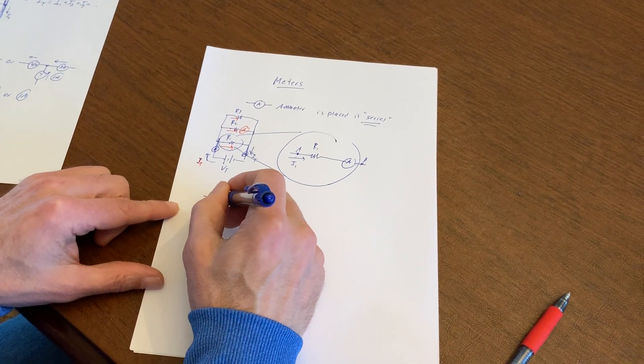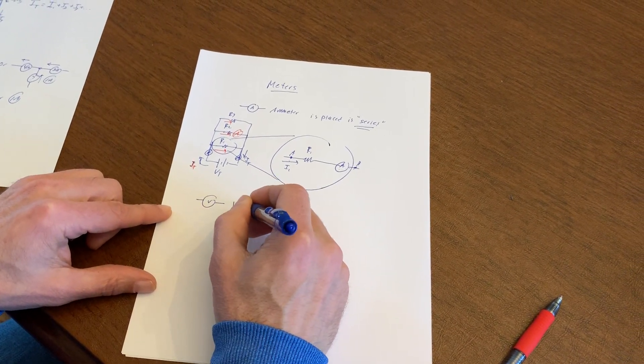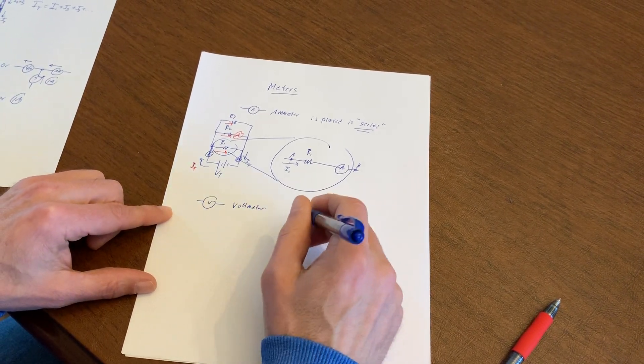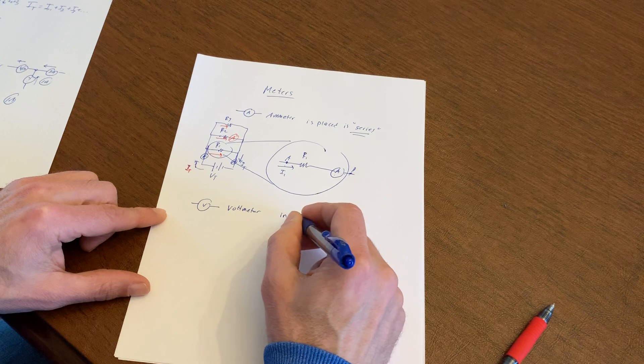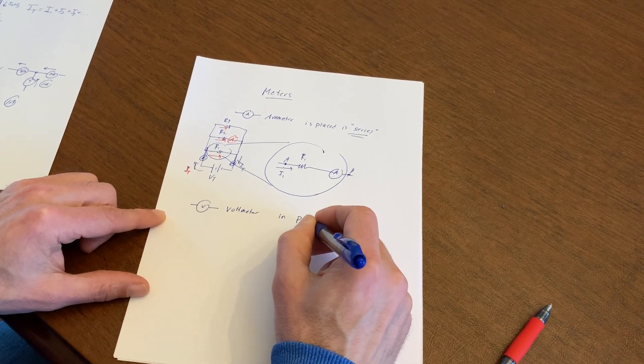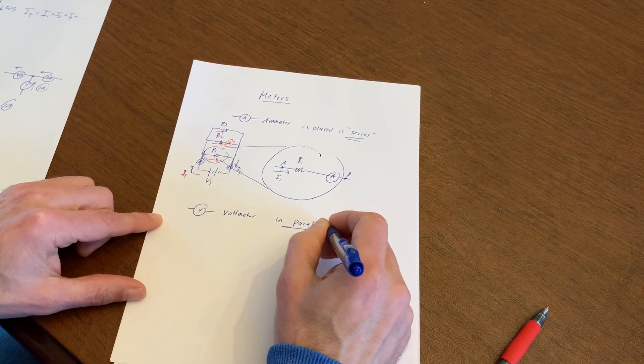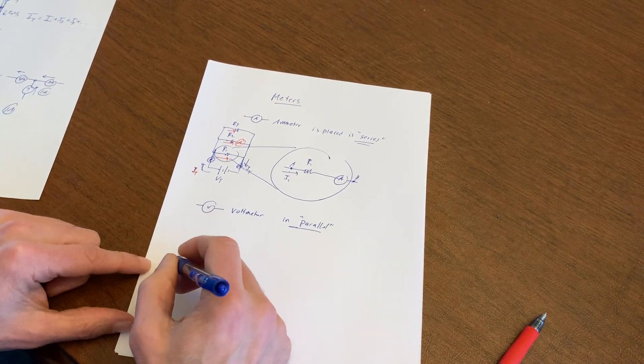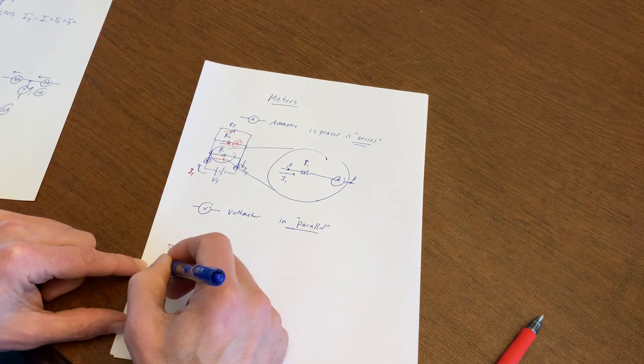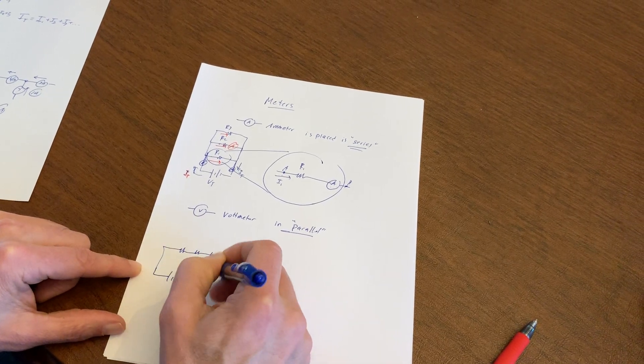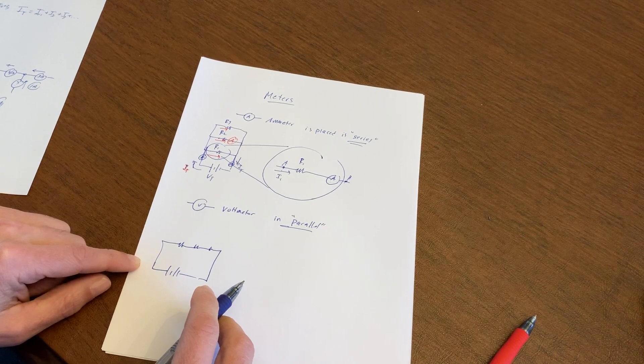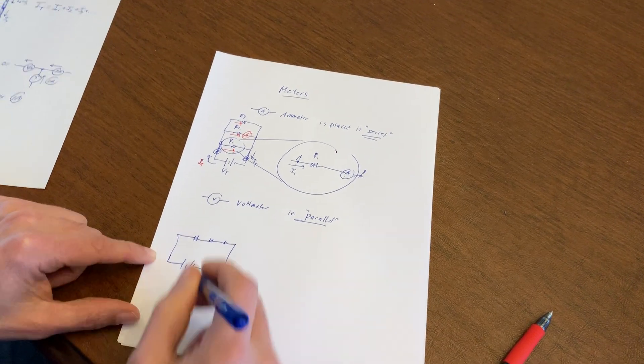Now, one last thing, voltmeter. Where do I place voltmeters? Well, voltmeters are going to be in parallel. What do I mean by parallel? All right, I'm going to draw another circuit here. And I'm purposely drawing what type of circuit? Well, a series circuit, not parallel. I'm drawing a series circuit.